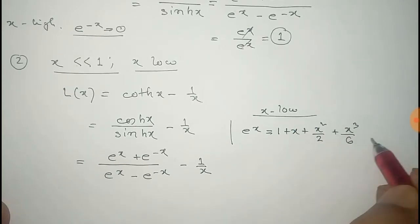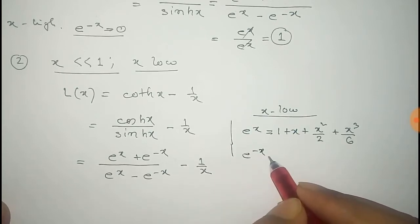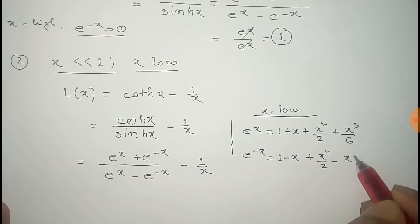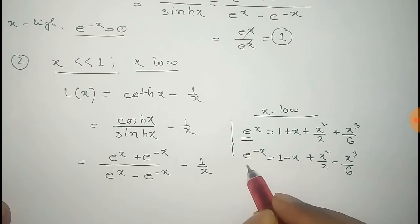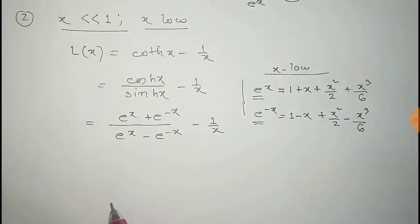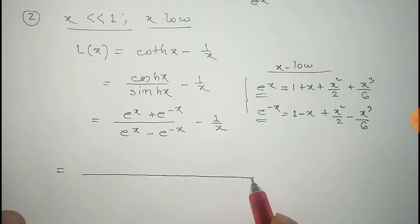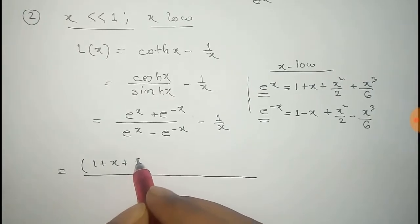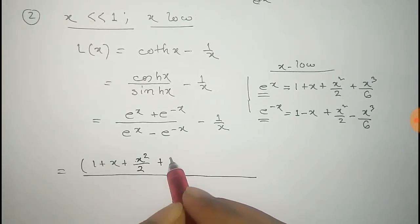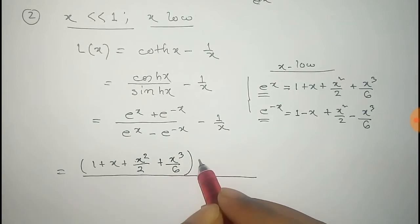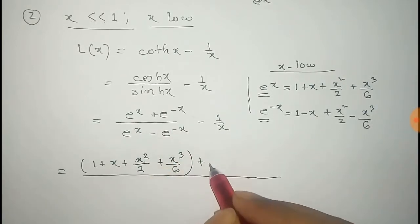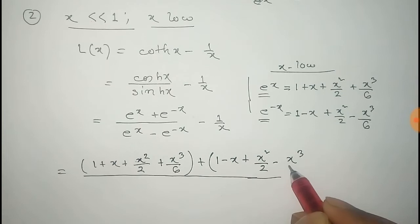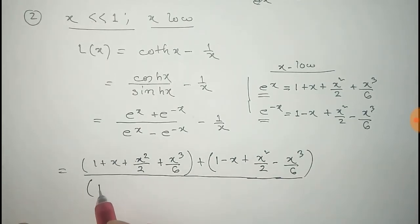Higher order terms can be neglected since X is very, very less than 1. Similarly, e^{-X} can be written as 1 − X + X²/2 − X³/6. Substituting the values of e^X and e^{-X}, we get (1 + X + X²/2 + X³/6 + 1 − X + X²/2 − X³/6) divided by (e^X − e^{-X}), minus 1/X.